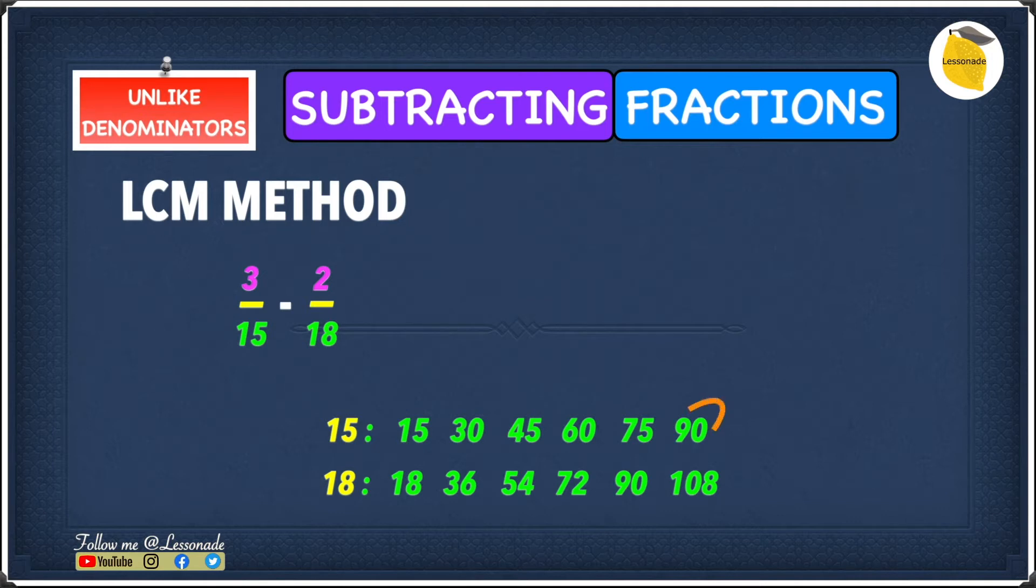This means we need to find what number we have to multiply 15 to get to 90. So what number do we have to multiply to 15 to give us 90? It's obviously 6 because 15 times 6 gives you 90.